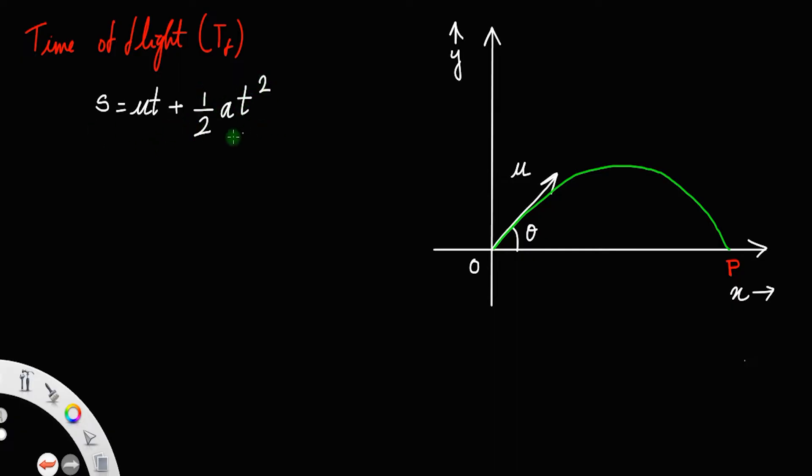This equation is the second kinematic equation, and before that you have to resolve the initial velocity. The horizontal component of initial velocity is u cos theta, and the vertical component or y-component of initial velocity is u sin theta.